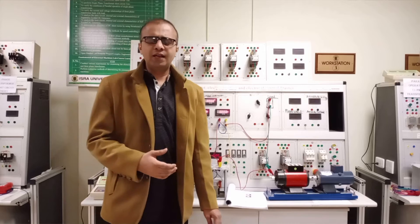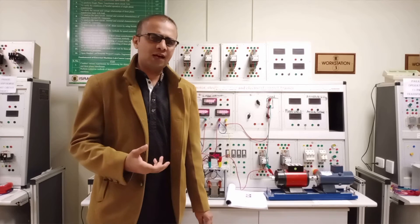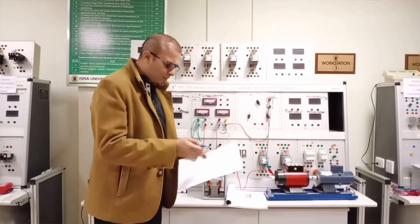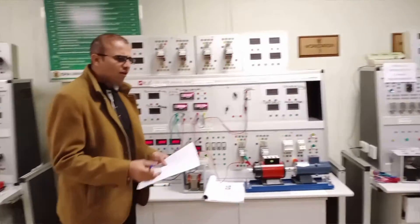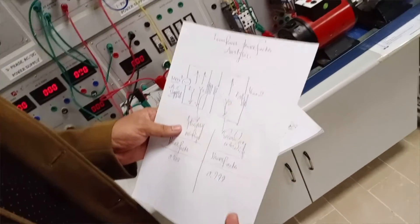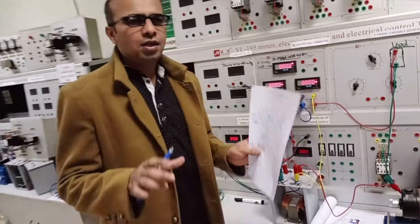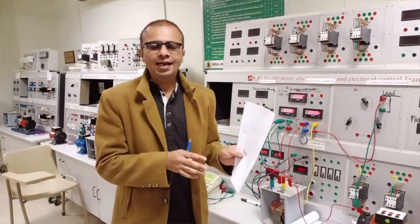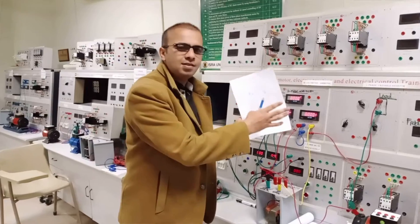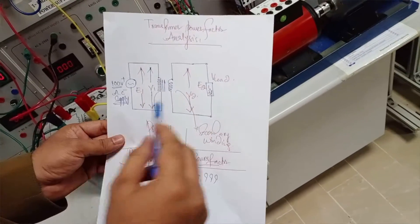So before doing the experiment, we need to know what kind of modules we are using and what will be the circuit diagram we have to follow to make the connection on this trainer. We will implement the circuit diagram on this trainer to find the power factor of the transformer. For the demonstration purpose we are using a resistive load, and with a resistive load the power factor is unity, because there is no angle between the voltage and the current.